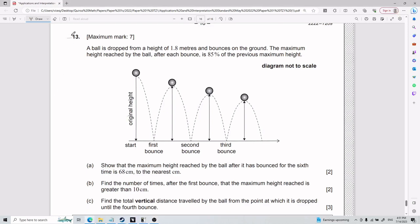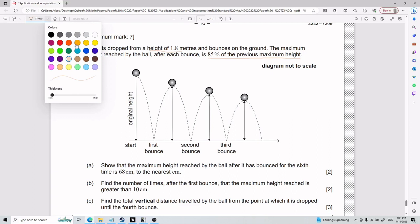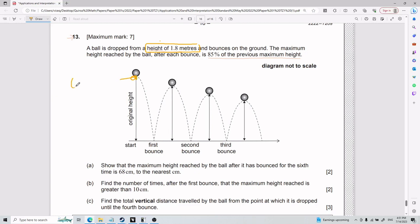Alright, and for the last one, number 13, we have that a ball is dropped from a height of 1.8 meters and bounces on the ground. The maximum height reached by the ball after each bounce is 85% of the previous maximum height. So let's add a little bit of perspective to this. 1.8 meters is the first one which is over here. And the following ones are 85% of the previous maximum height. So this one, because it's 85% less than the last one, right? Basically, there's a decrease of 15% here. There's another decrease of 15% with the last one, and so on and so forth. So that is what it means by the 85%.